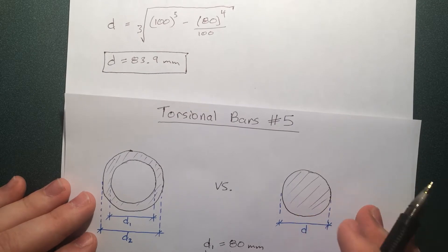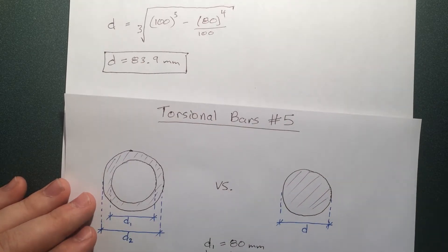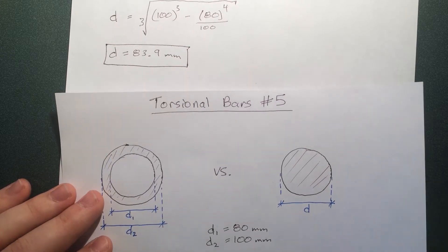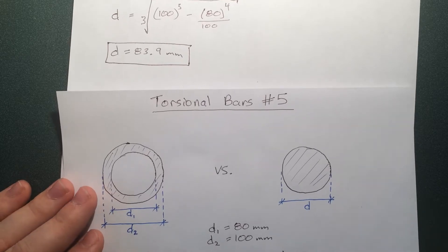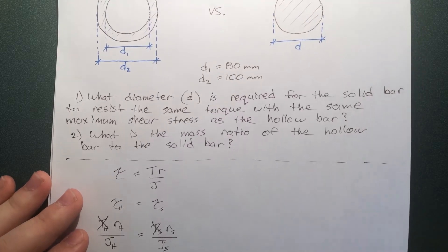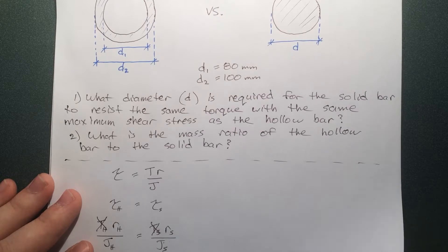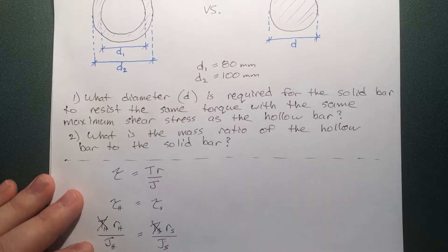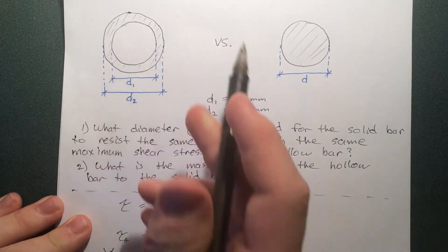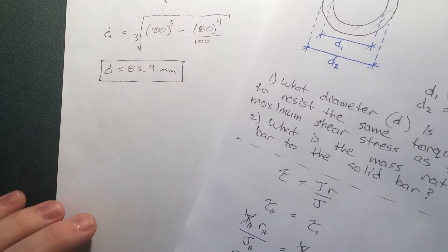That's what you always want to do in these problems — think about what a reasonable value should be, and see how close your answer is. If you got something like 20, that's not going to be reasonable. Now for the interesting part: let's find the ratio of their masses, because this is where the efficiency comes in. If you're manufacturing turbines and building 10,000 per year, the metal savings from removing that core could be astronomical.